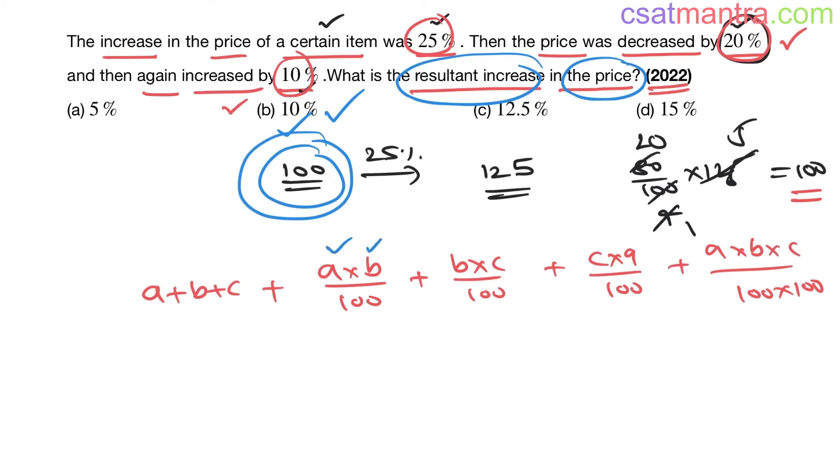Now a is plus 25, b is minus 20, c is plus 10. a into b: 25 into minus 20, that is minus 25 into 20 by 100. b into c: minus 20 into 10 by 100. c into a: 25 into 10 by 100. And a b c: minus 25 into 20 into 10 by 100 into 100.